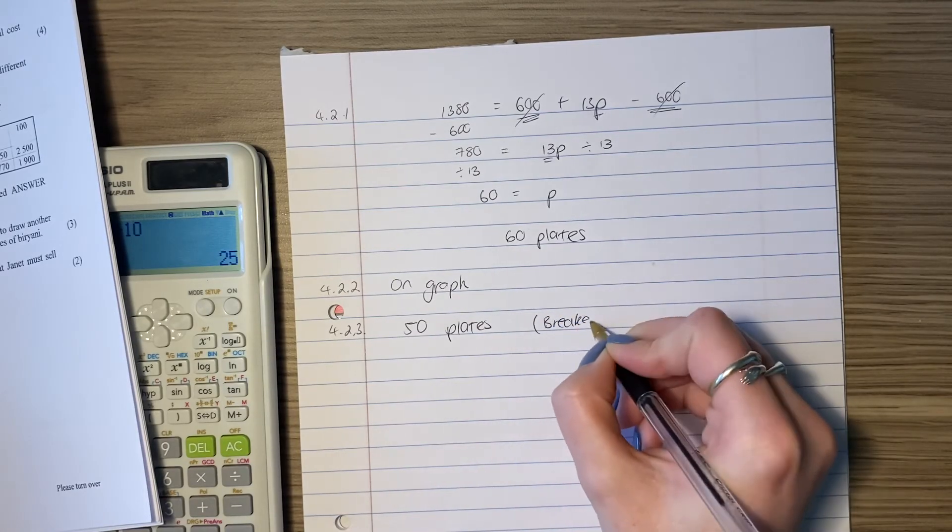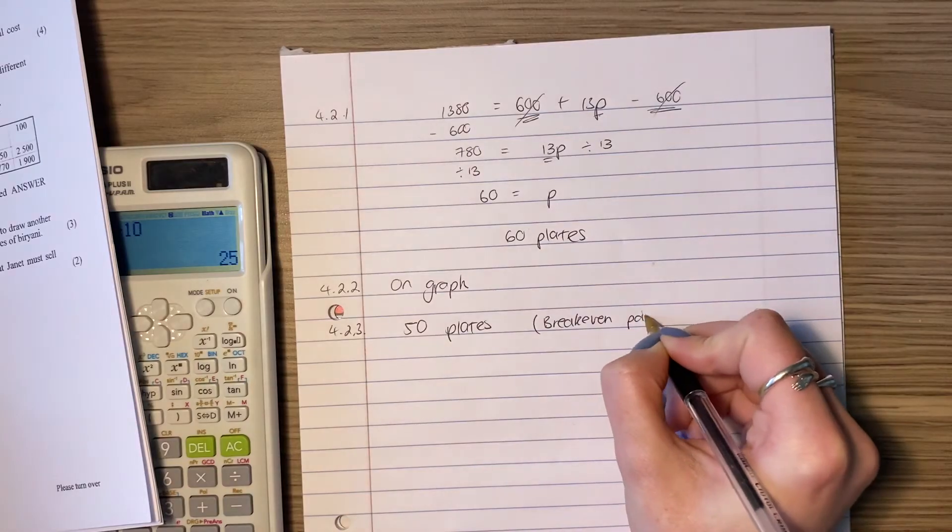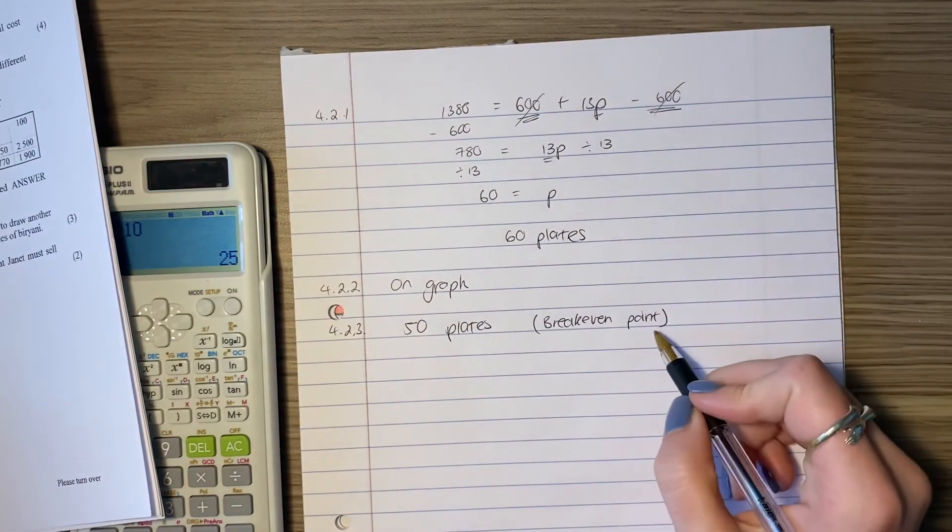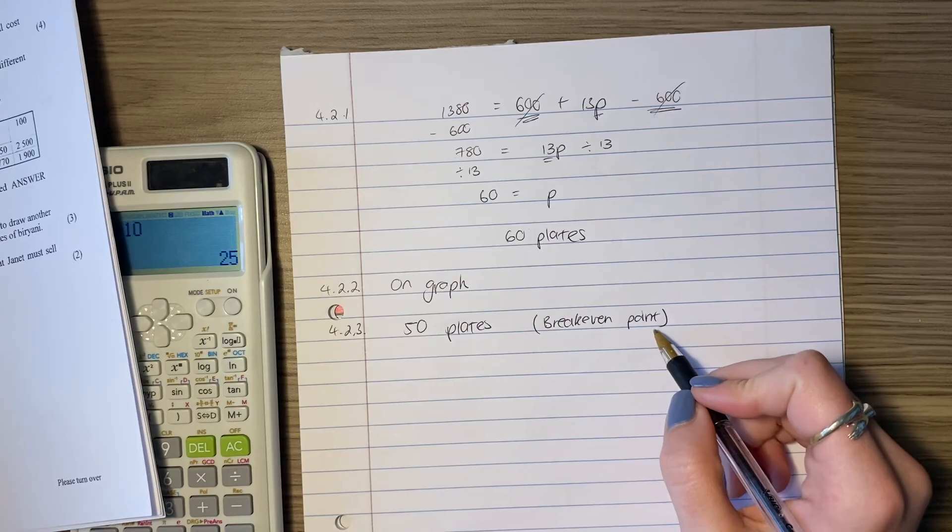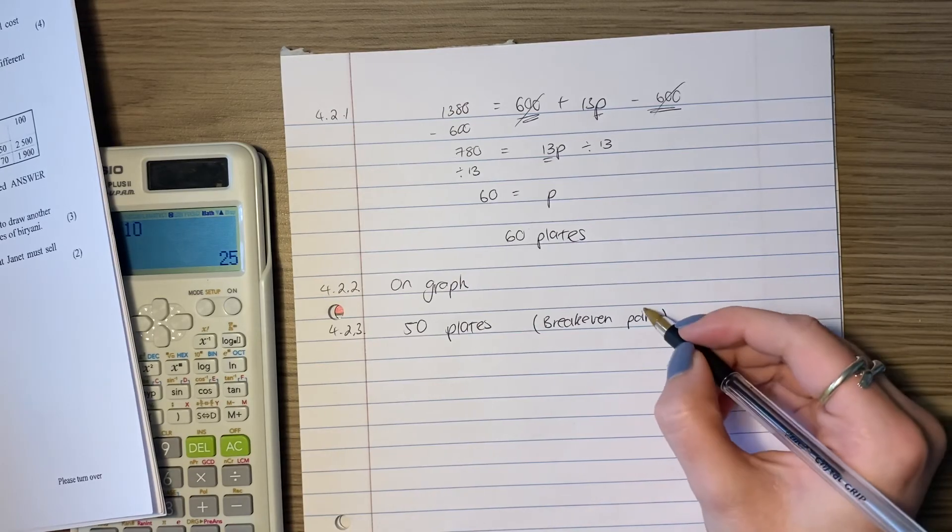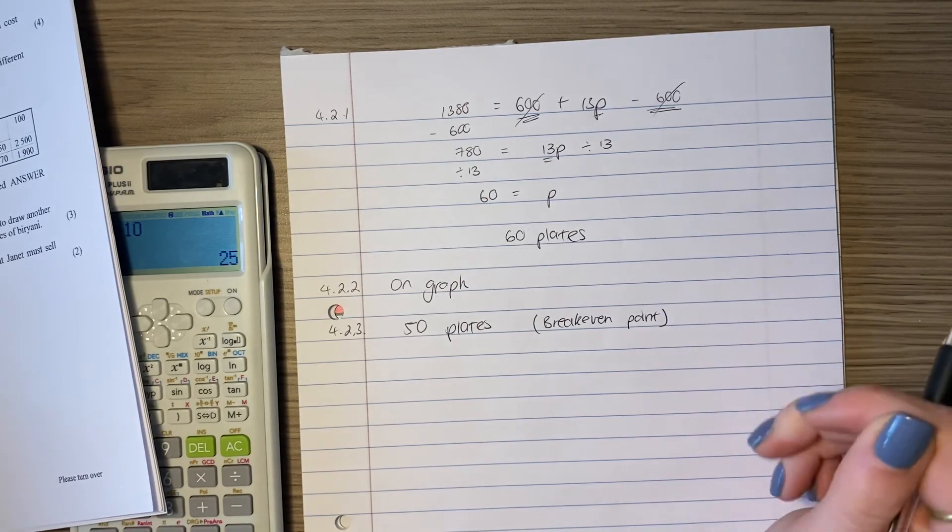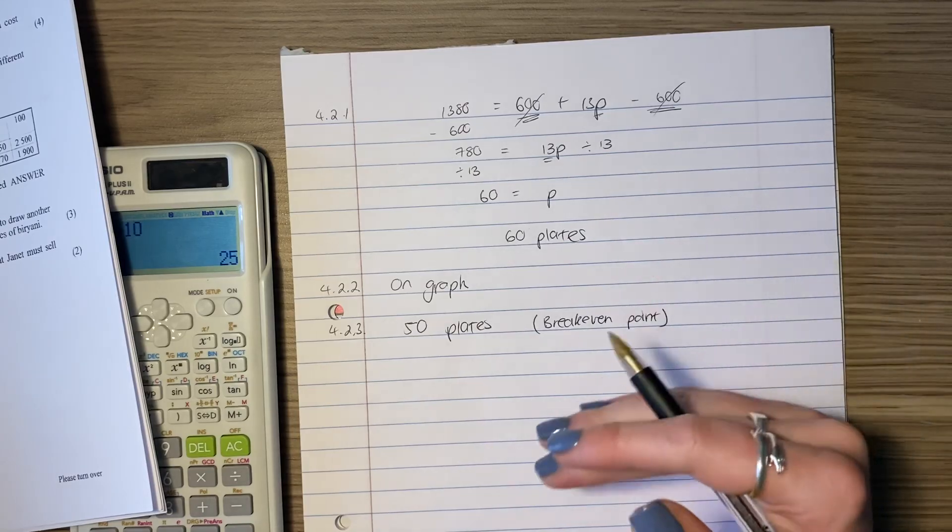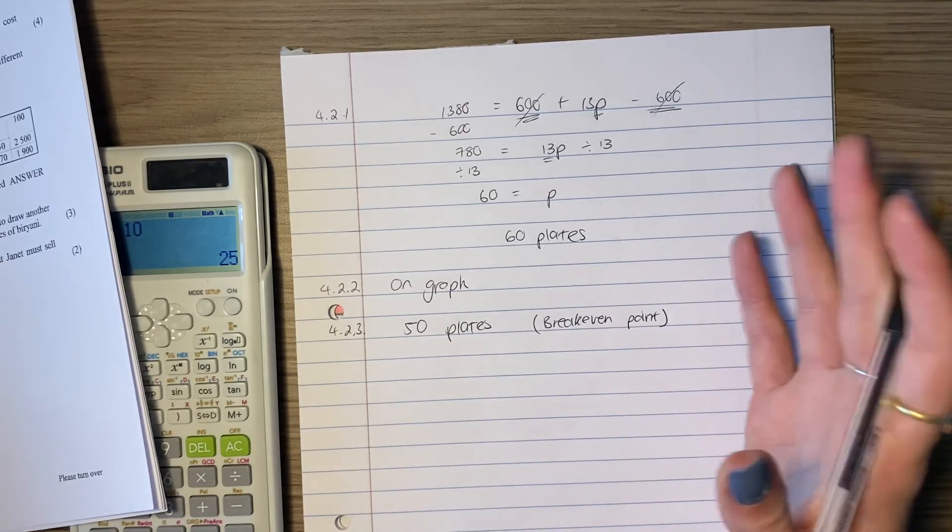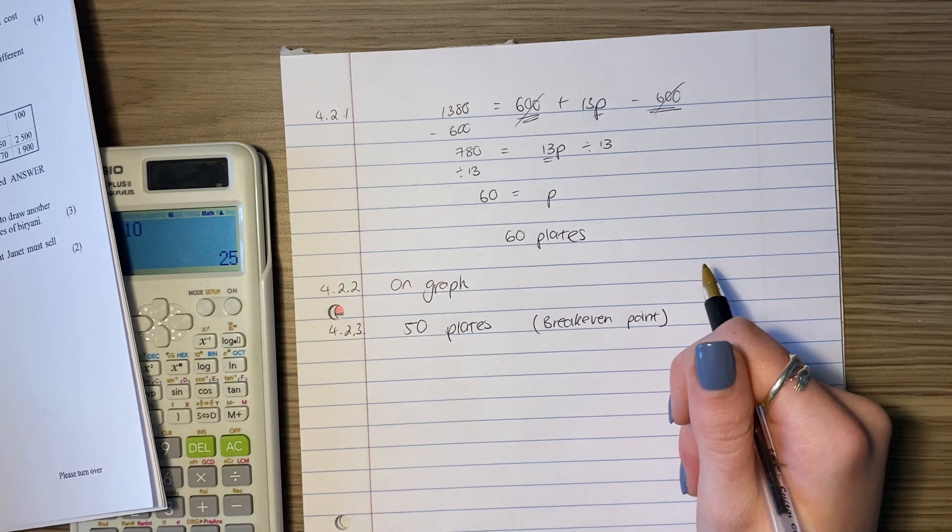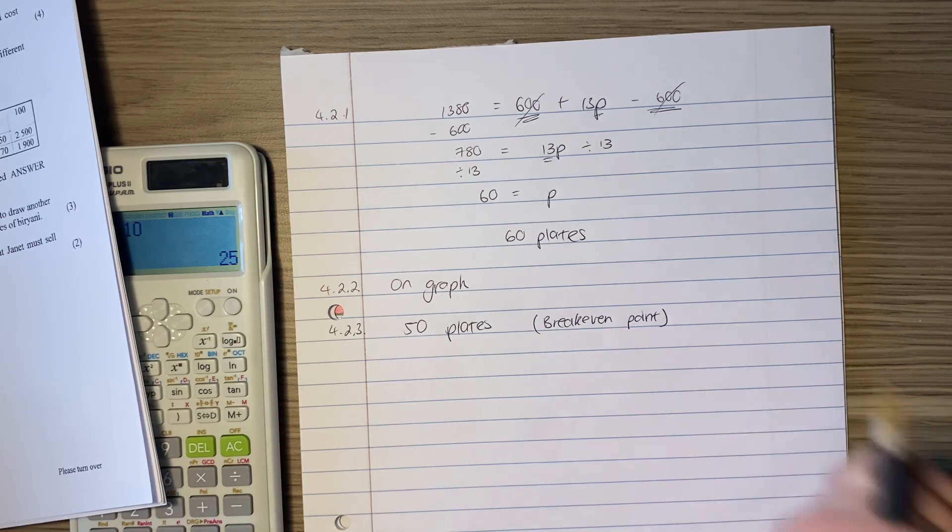And you might not get huge credit, but what you're telling your marker is you understand what the question's asking. So you might get a little bit of credit, maybe one mark there. So when you don't understand, don't just give up. Try and represent your thinking on your page so that they can mark it. Okay, that's us done for this video. See you in the next one.